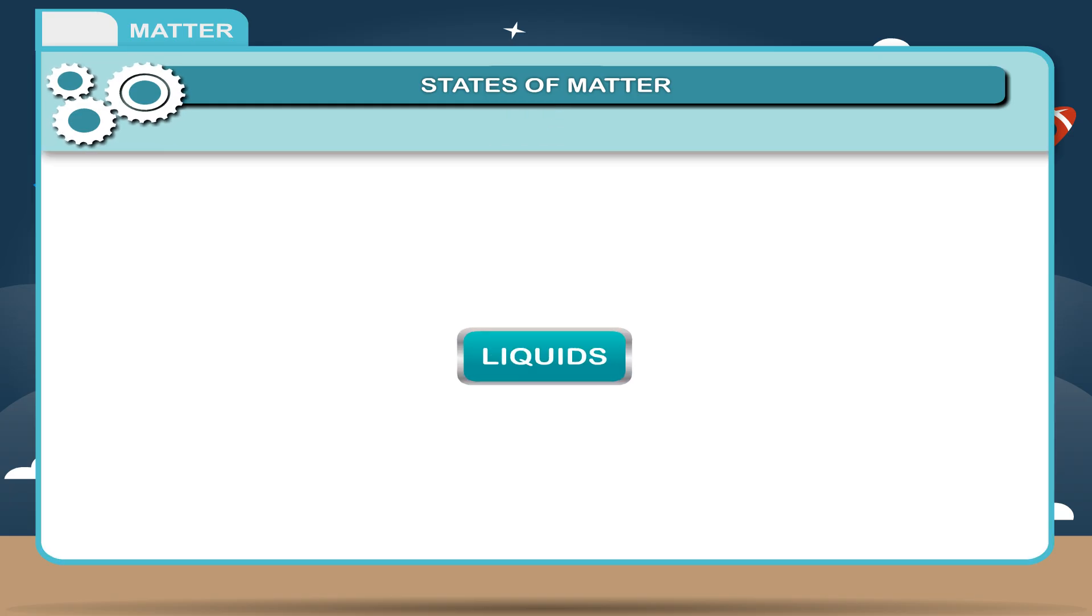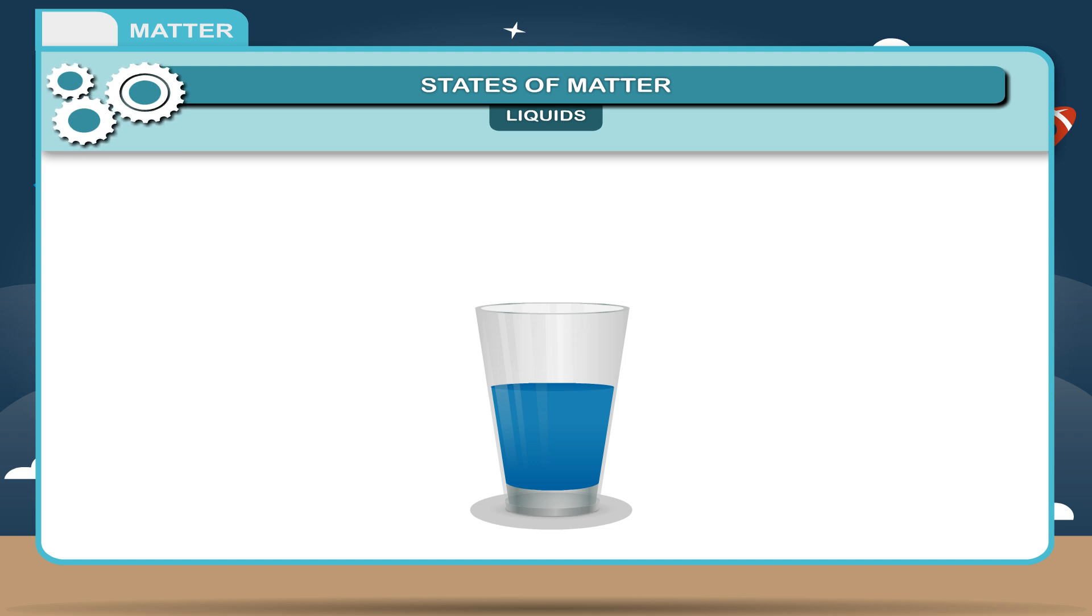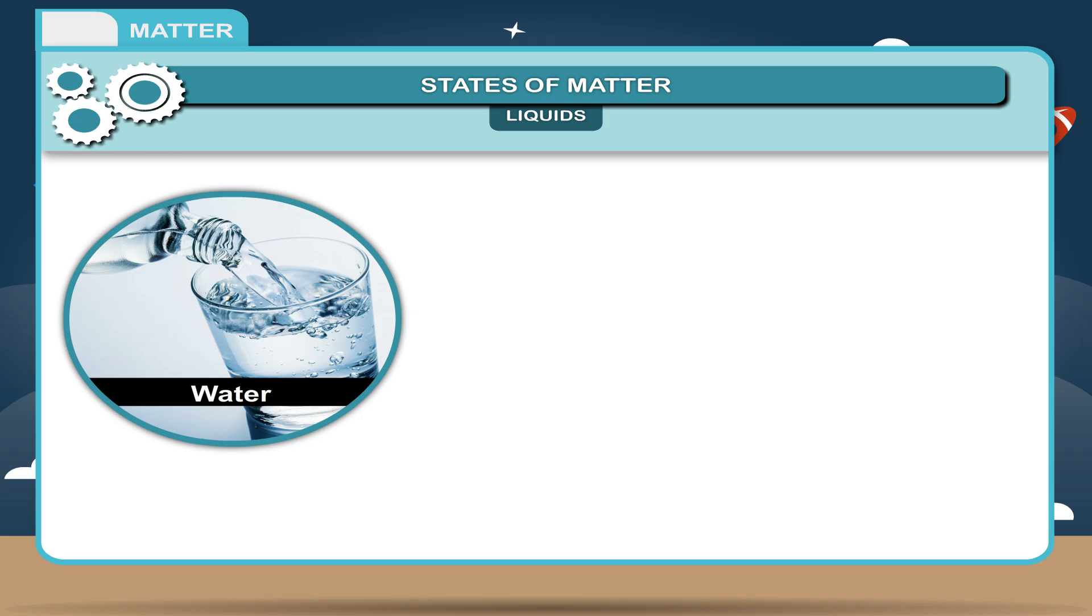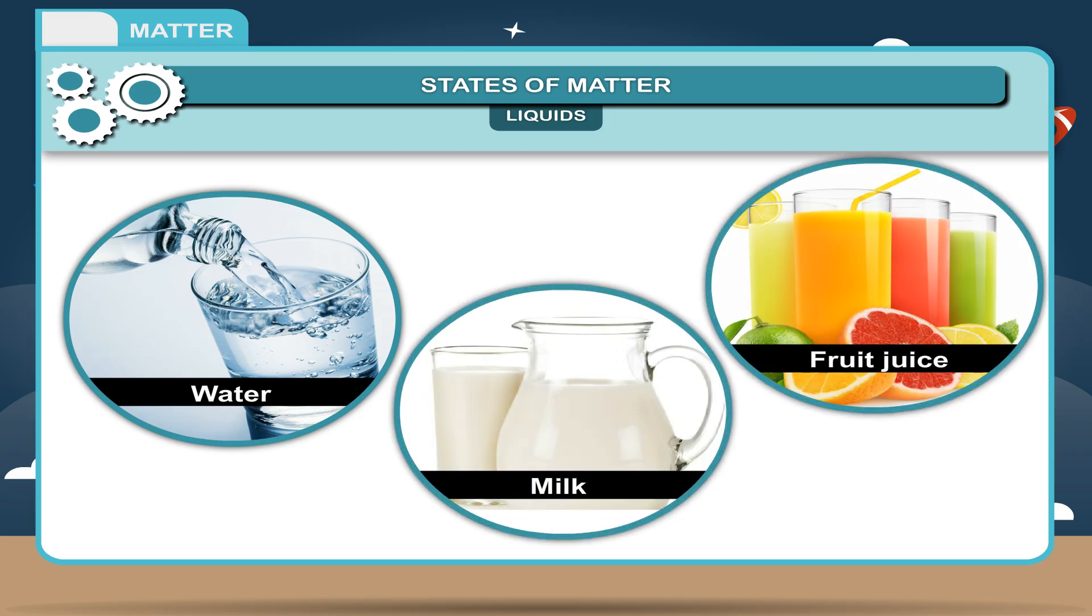Liquids have no definite shape but occupy a definite space. The particles of liquids are less attracted to each other than solids, e.g., water, milk, fruit juice, etc.